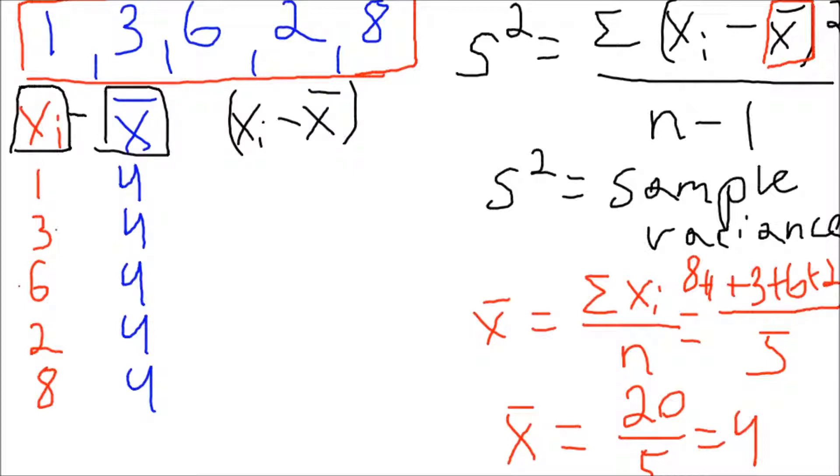So, the 1 minus 4 is negative 3. And don't worry if you get negatives, that's actually what you're supposed to get. Well, they're all canceled at the end, we'll see. 3 minus 4 is negative 1, 6 minus 4 is 2, 2 minus 4 is negative 2, and 8 minus 4 is 4.